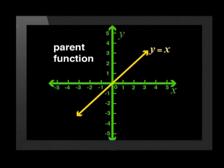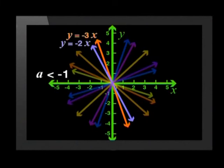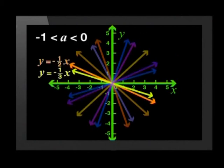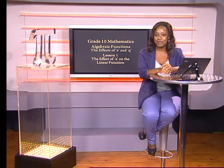Let's recap what we have learned. The parent graph of the straight line family is y equals x. If a is greater than 1 or less than negative 1, the graph is steeper than the parent graph. If a is a fraction less than 1 or greater than negative 1, the graphs get flatter. If a equals 0, we get a horizontal line with zero gradient. Remember to try the task video at the end of this section, and visit www.mindset.co.za to learn more about linear functions.